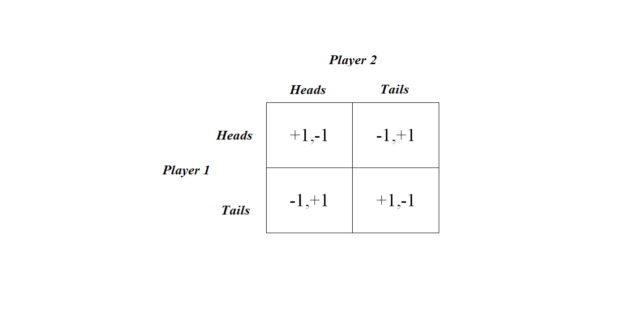Now if we get heads and heads then in that case player 1 gets the payoff +1 and player 2 gets a payoff -1. In case of heads and tails, -1 for player 1 and +1 for player 2. If it is tails and heads, then again it will be -1, +1 and in case of tails and tails, it will be again +1, -1. So we can represent the action set, outcomes and payoffs using this game matrix.